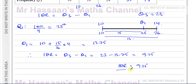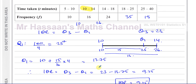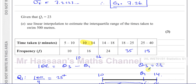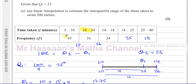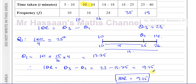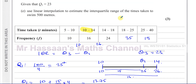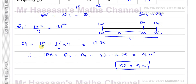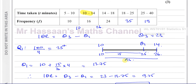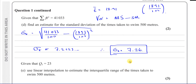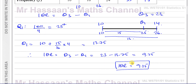The examiner's report mentioned that many people just found the lower quartile and left it at that, forgetting what the actual question was asking. So always be careful not to lose marks by not reading the question properly. The question asks for the interquartile range, not just the lower quartile — you need to find the lower quartile in order to then find the interquartile range.